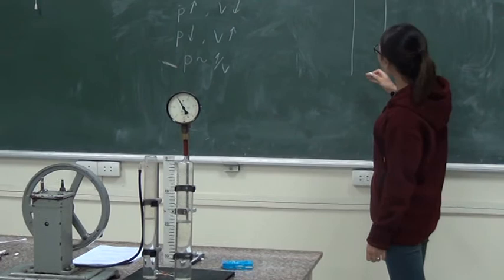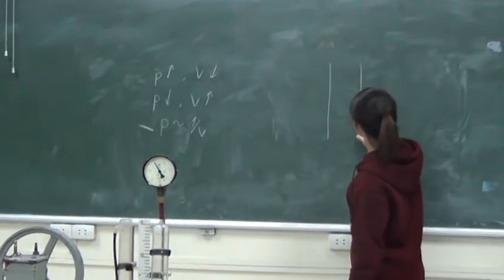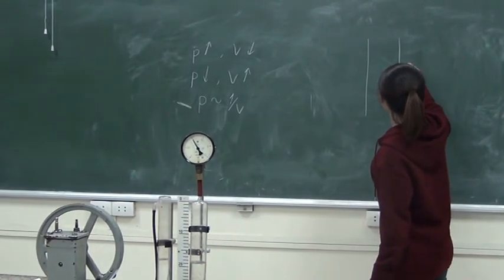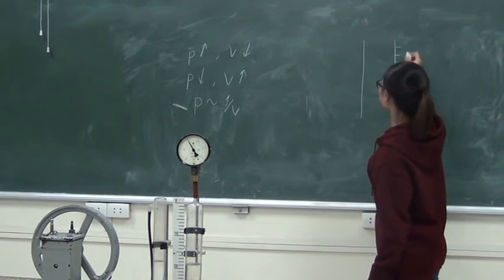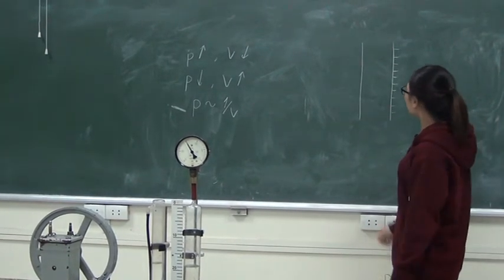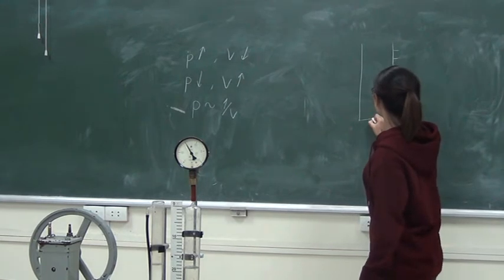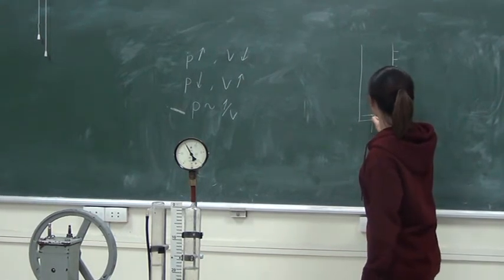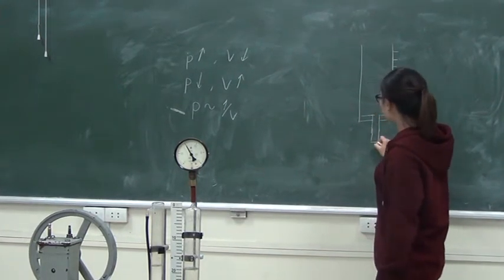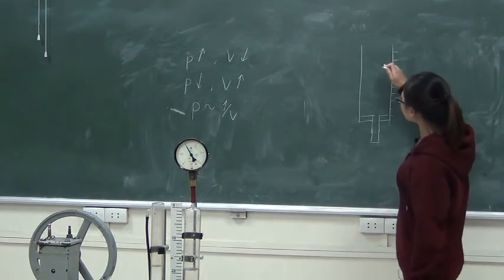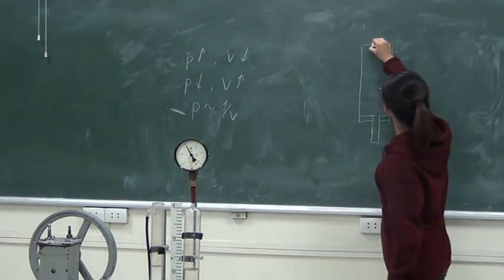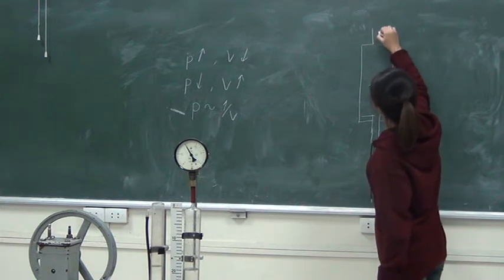In particular, we need to use a cylinder with markings on it to easily measure the volume. We use a piston to change the volume. And to measure the pressure, we connect this with a manometer.